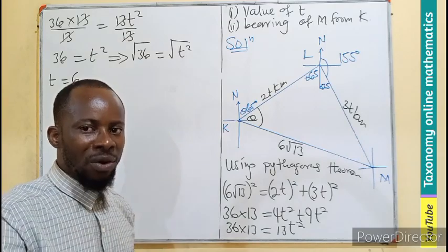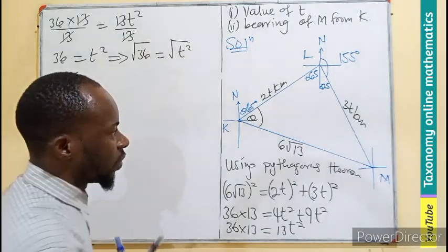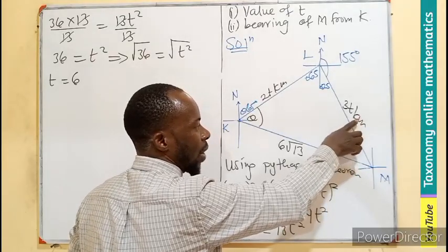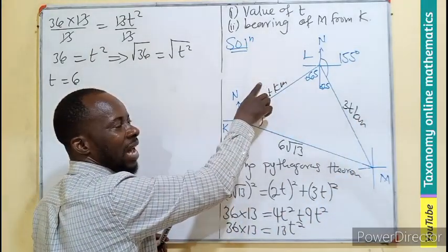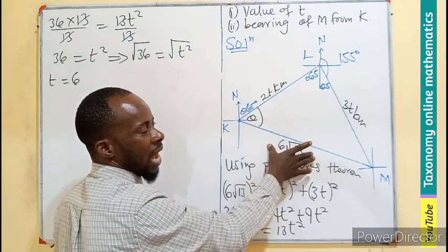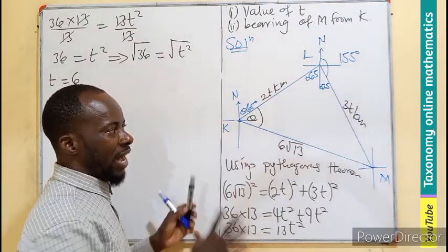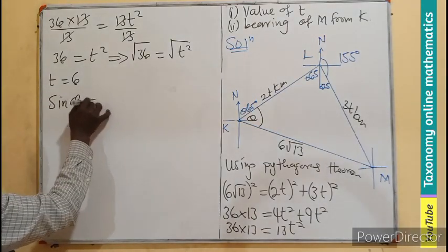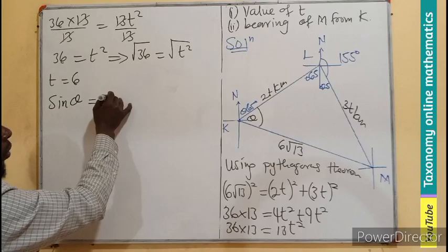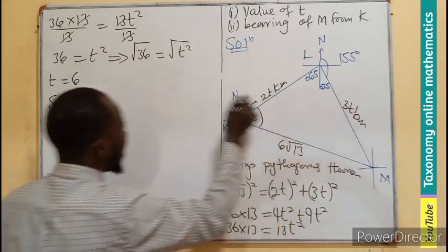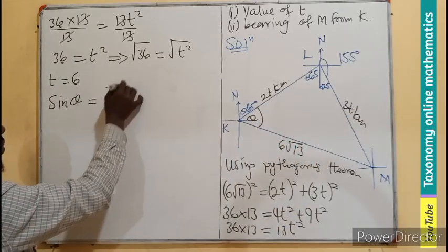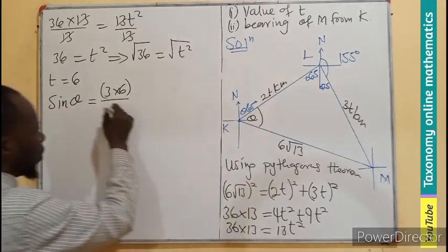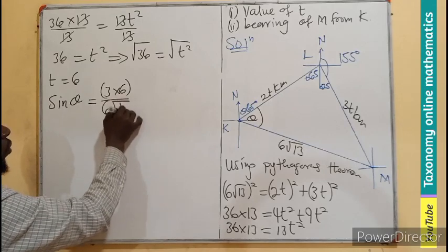Add it on to 65 to be able to find the bearing of M from K. So since this is the angle facing this, this is going to be our opposite, this is going to be the adjacent, this is going to be hypotenuse. So I can say that the sine of the angle equals to the opposite side which is 3 times 6, you know the 3T, T is 6, divided by the hypotenuse, which will be 6 root 13.